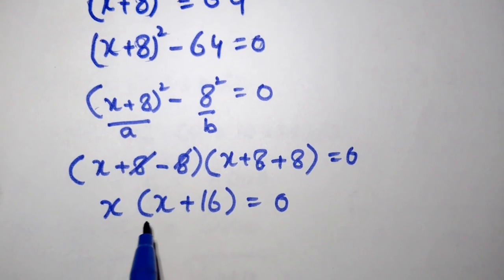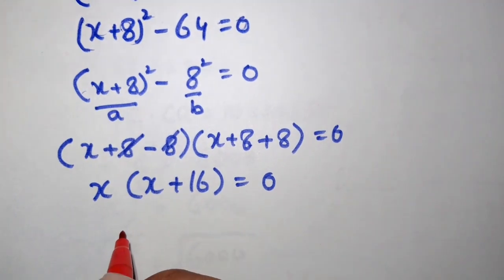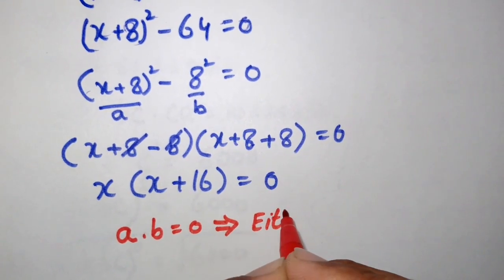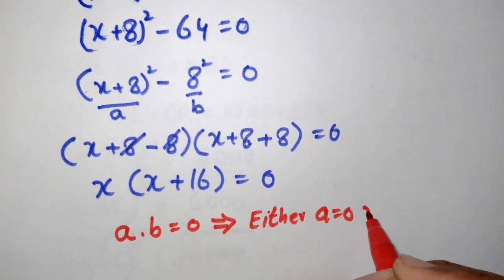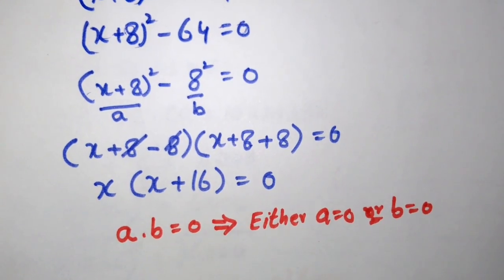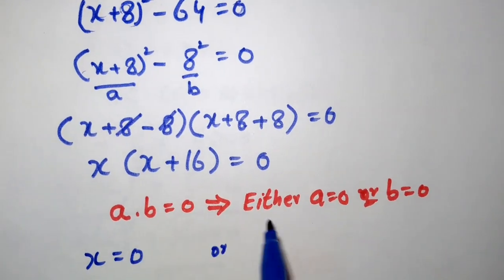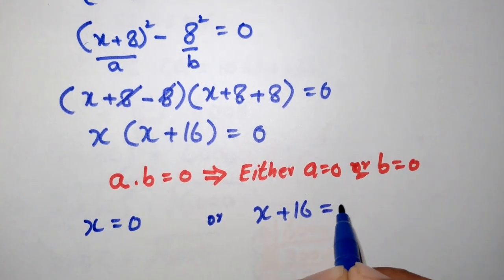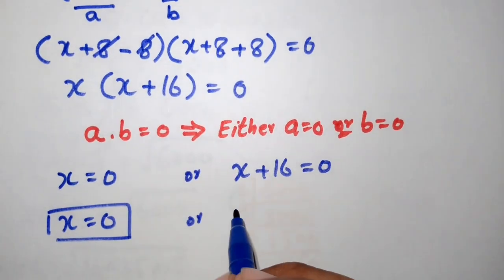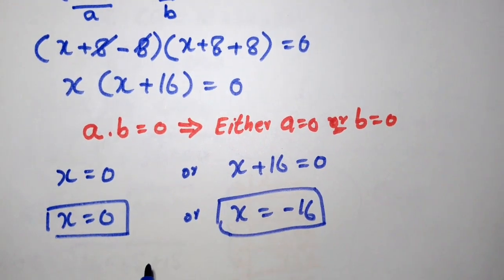Now we apply the zero product rule: if a × b = 0, then either a = 0 or b = 0. Applying this here gives x = 0 or x + 16 = 0. So x = 0 is the first solution, or moving 16 to the right side, x = -16 is the other value. This completes Method 1.